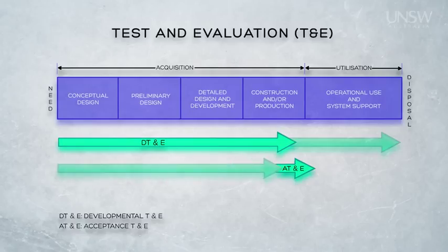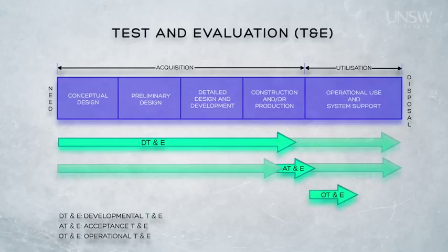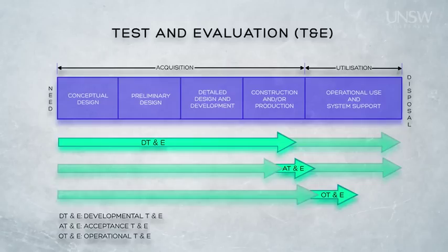The next activity is Operational Test and Evaluation, or OT&E. Once the system has been accepted from the developer, OT&E may be conducted under realistic operational conditions by operational personnel in order to validate the capability system. OT&E is normally conducted for a period of time following acceptance of the system by the customer from the contractor — that is, after AT&E — and before full introduction into service.